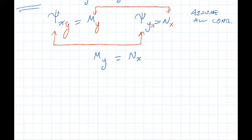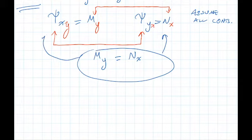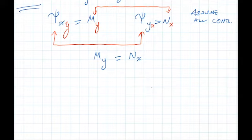Therefore, m sub y equals N sub x. And conversely, if we have m sub y equals N sub x, then we can work backward and deduce that both m and N come from the same function psi. So let's make that into a theorem.